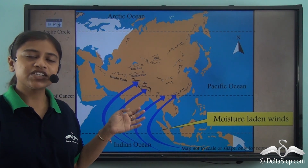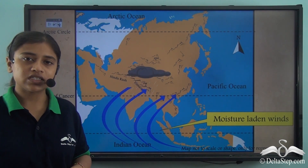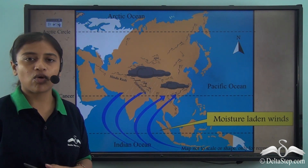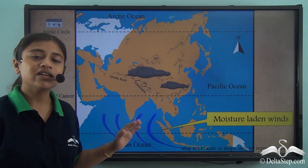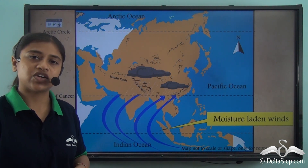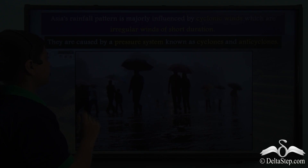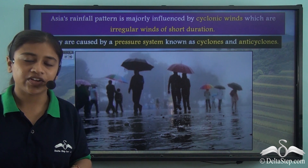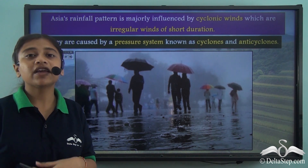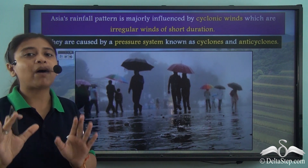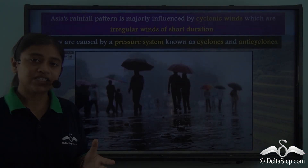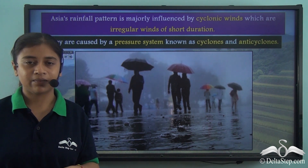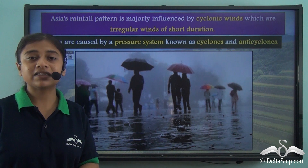The mountain ranges in the central and eastern part of the continent act as a barrier against the moisture-laden winds from the Indian and Pacific Oceans, bringing rainfall in the southern parts of the continent and keeping the rest dry. This gives rise to another major climate type: the tropical monsoon climate.